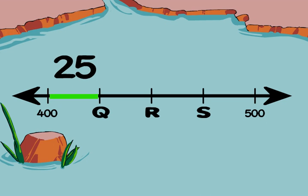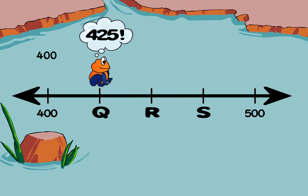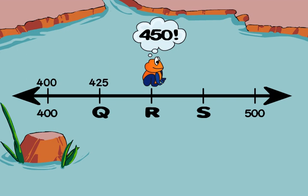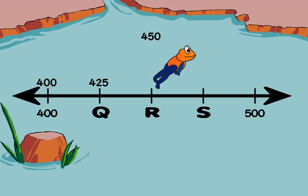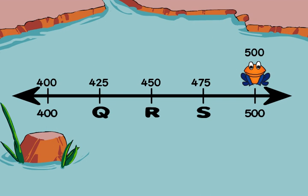Step 3: Now we can skip count by 25 from 400 to 500 to label the marks: 425, 450, 475. That lets us identify points Q, R, and S.